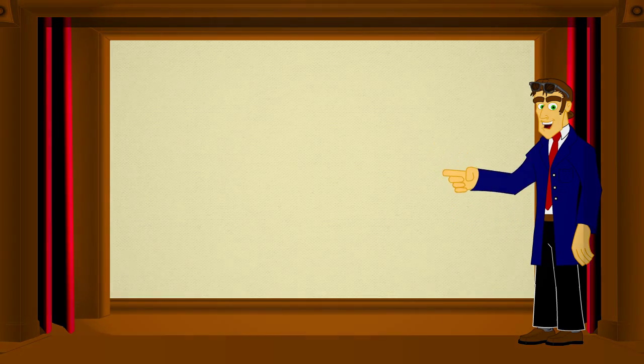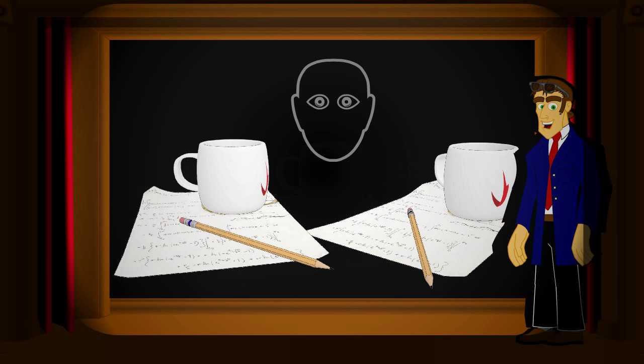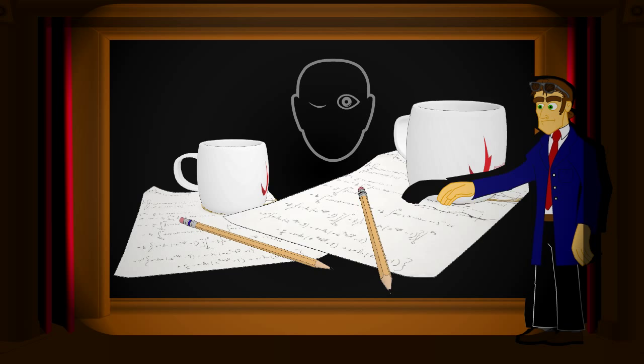When we want to artificially recreate this effect using a flat screen, we need to fool your brain and create the illusion of depth in a flat image. To do that, each of your eyes would need to perceive only its respective viewpoint. For example, we would need to have your left eye perceive this image, and your right eye this image.